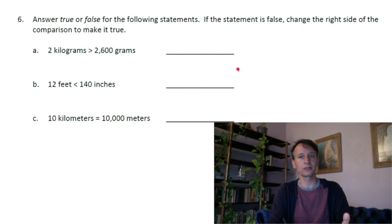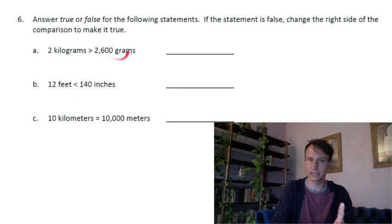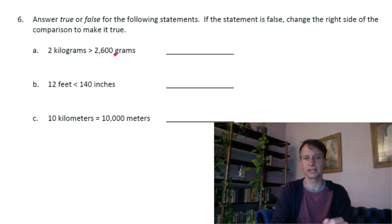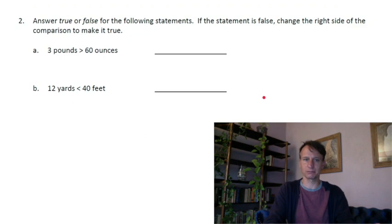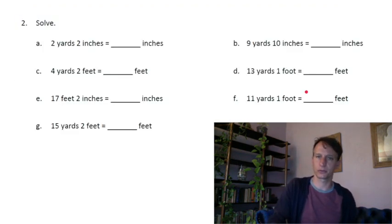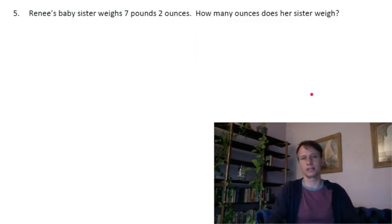There are eight conversions to do, and the numbers get bigger — with twenty-seven pounds, you probably don't want to do twenty-seven times sixteen directly, so break it down into ten, ten, and seven and use the table. There are also true/false comparisons — if it's false, you specifically need to change the right side to make it true. Then the exit ticket has more of the same but simpler. For homework, hop over to my homework time videos for a walkthrough of every single one.